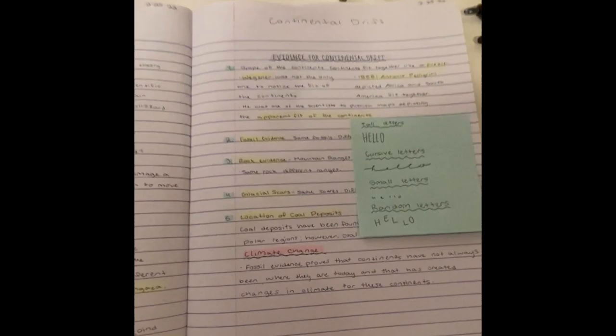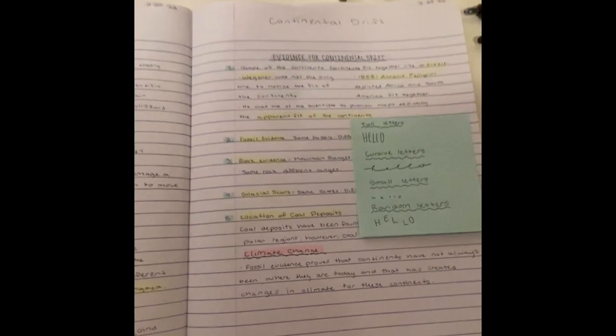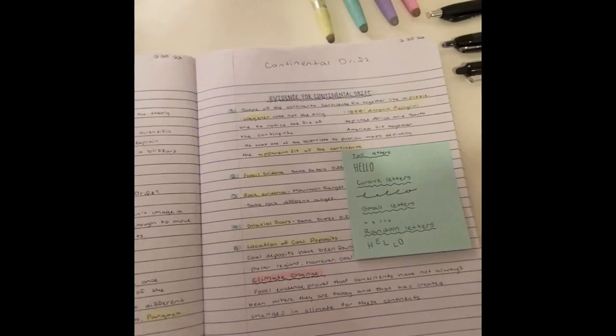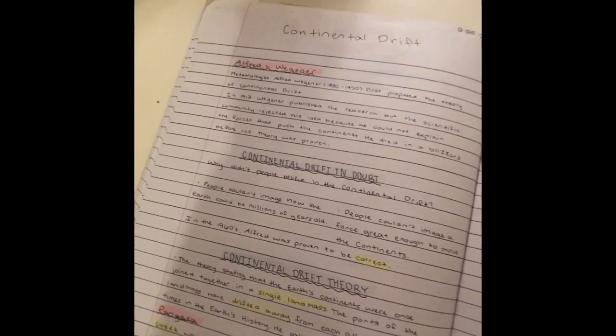For example, I used the yellow highlighter to highlight important words or phrases. I used the pink to do topics, and the purple to highlight the beginning of a new subject.